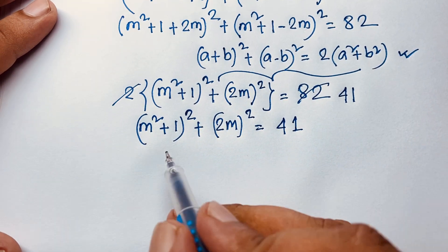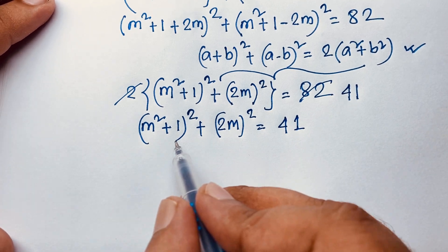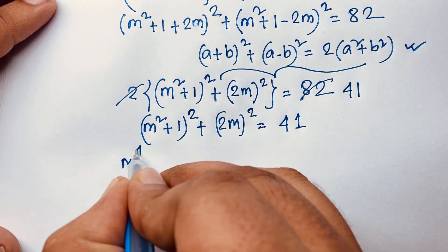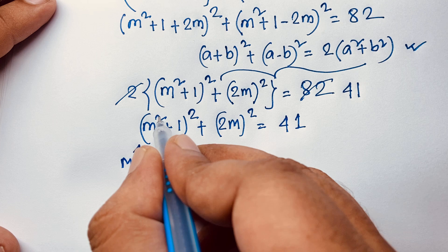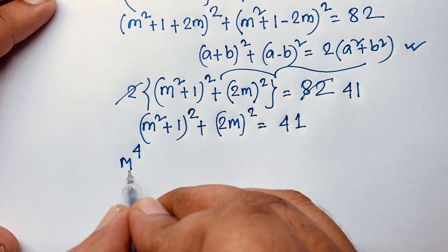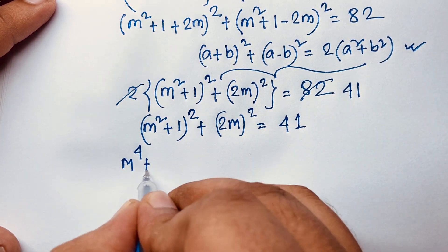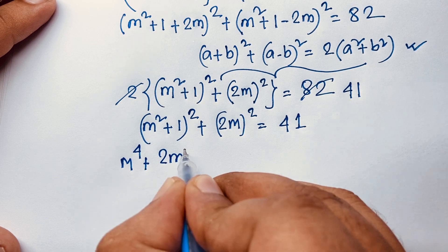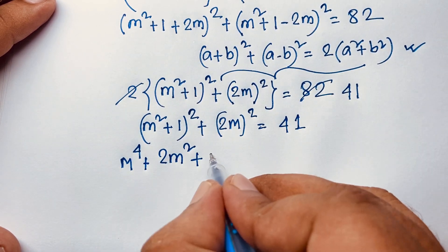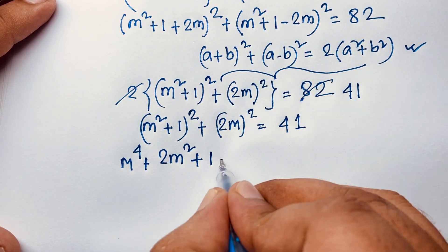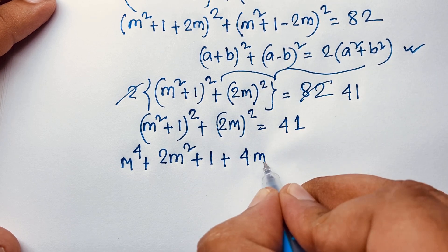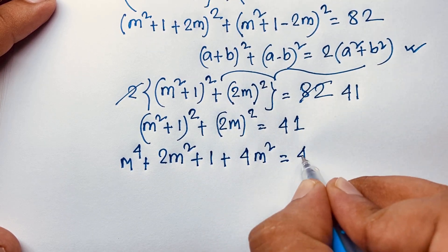Again, I apply this formula here — (a + b) whole square — so it will be: (m^2)^2 will be m^4, plus 2ab which is 2 times m^2 giving 2m^2, then b^2 which is 1^2 = 1, and it is 4m^2, is equal to 41.